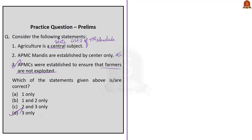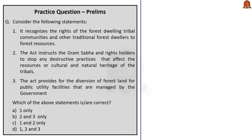The fourth question is regarding the Forest Rights Act 2006: first statement — it recognizes the right of forest dwelling tribal communities and other traditional forest dwellers to forest resources; second statement — the act instructs the gram sabha and right holders to stop any destructive practices affecting resources or cultural and natural heritage of tribes; third statement — the act provides for diversion of forest land for public utility facilities managed by the government. Based on our discussion, all three statements are correct; the correct answer is Option D: one, two and three.